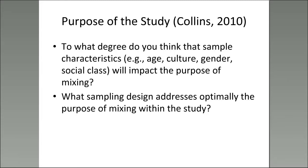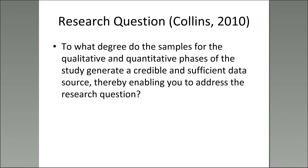An important component to think about is how the sample characteristics impact the purpose of mixing, and what sampling design optimally addresses the purpose of mixing. For example, is the purpose triangulation? Are you looking for convergence, or are you looking for divergence — where through your strategic sampling design you expect different facets of interpretation relative to the phenomenon of interest? You don't necessarily want them to converge into a similar conclusion; you may be looking for divergence.